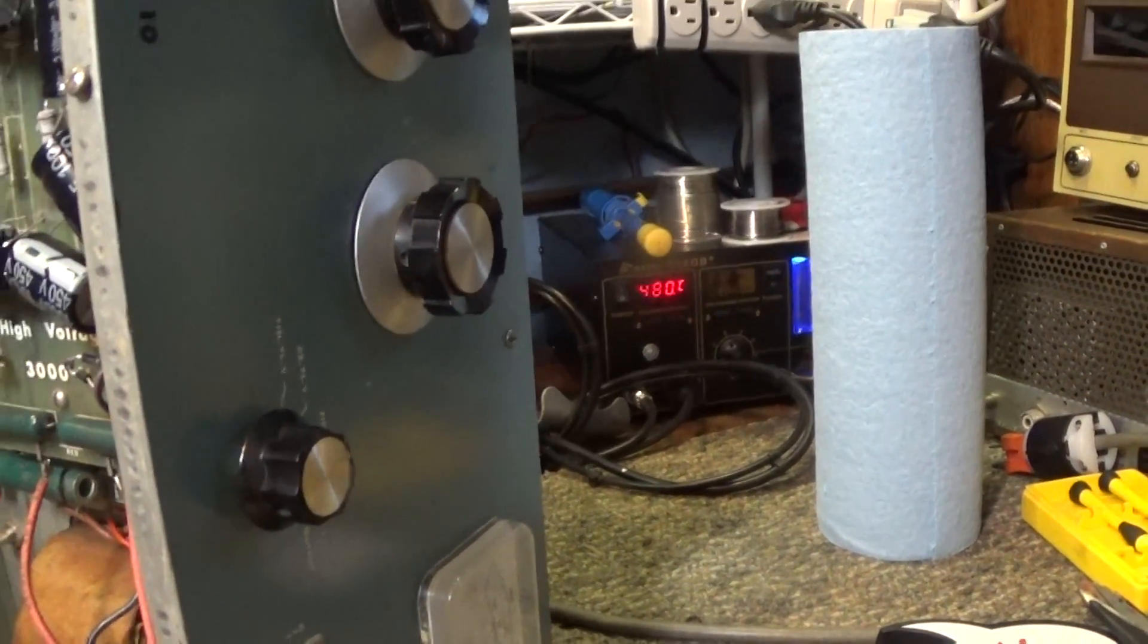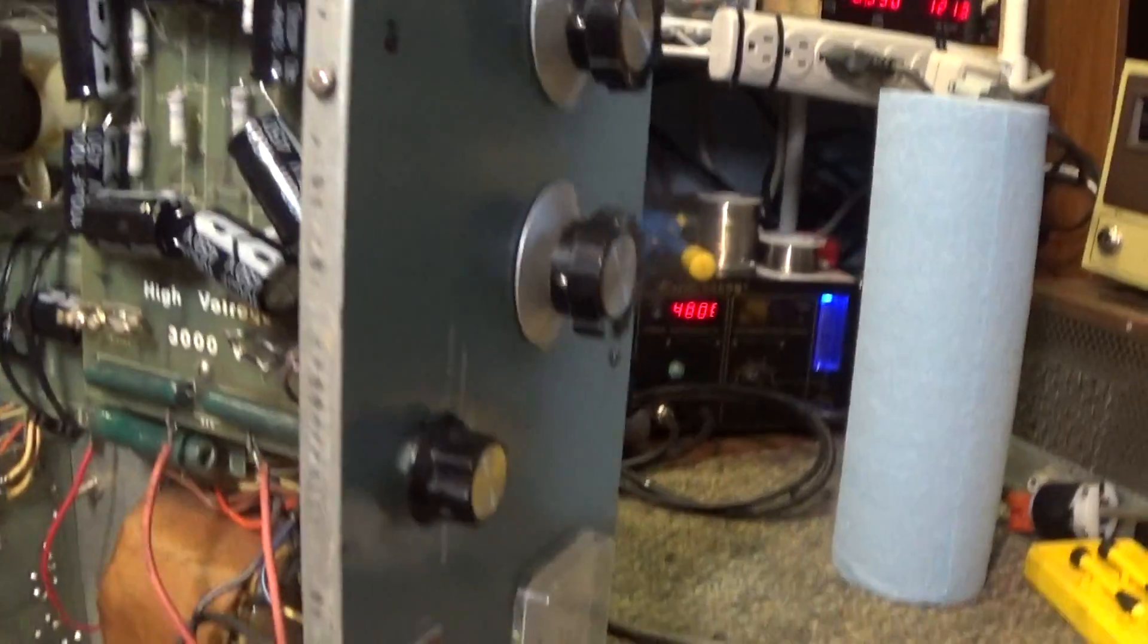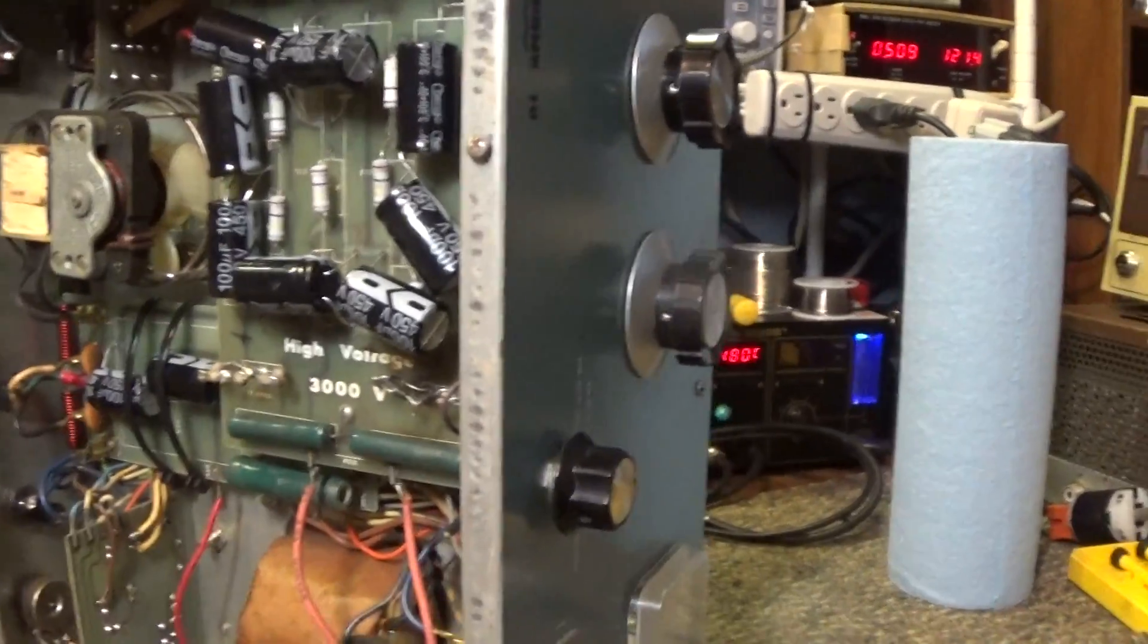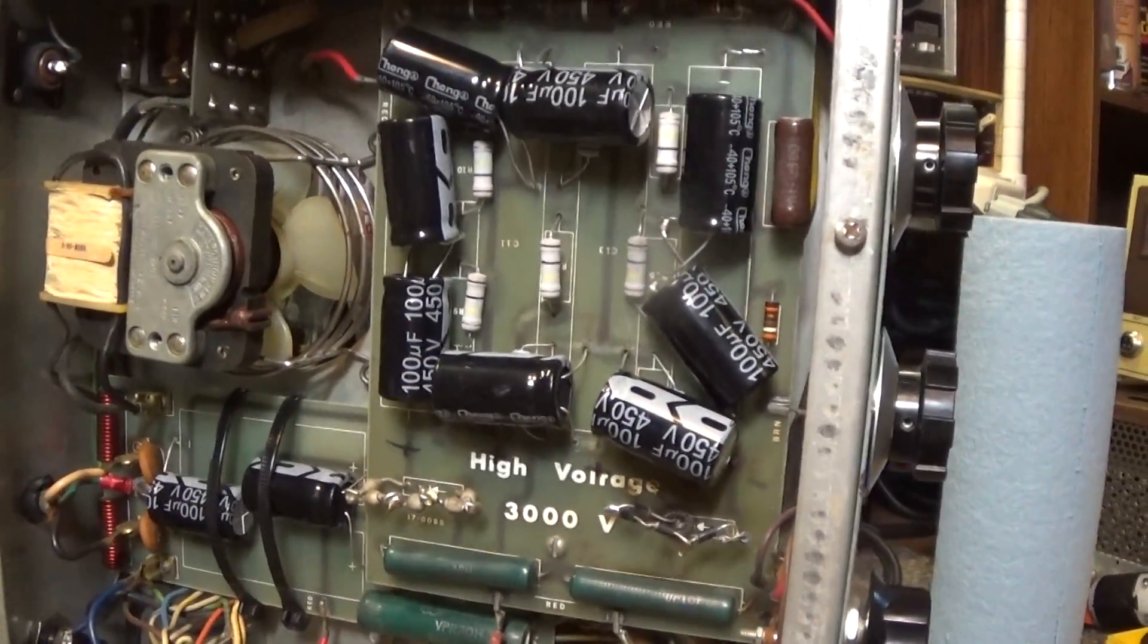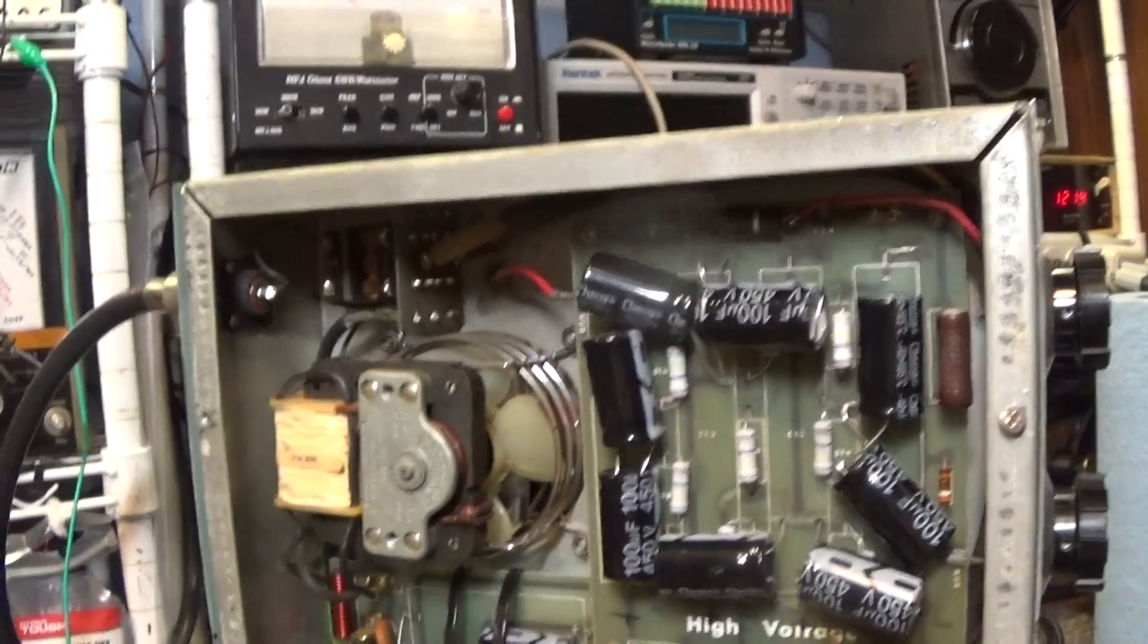This is the model 10-4a, also known as the model 5b with the driver in it. They do make other models without the driver. It's a single band 6 or 10 meter amp depending on how you tap the coil. This one is tapped for 10 meters.